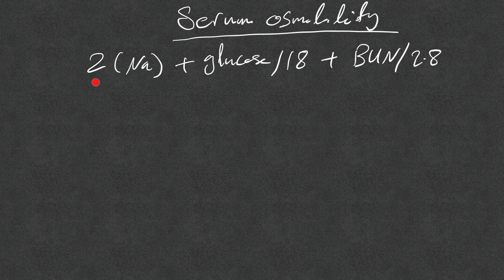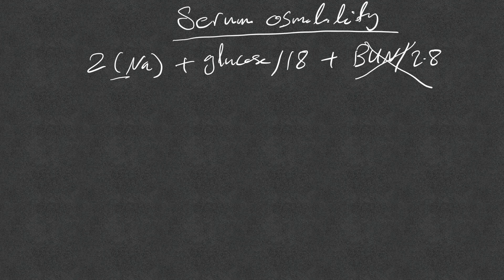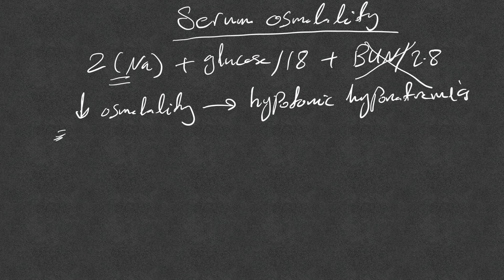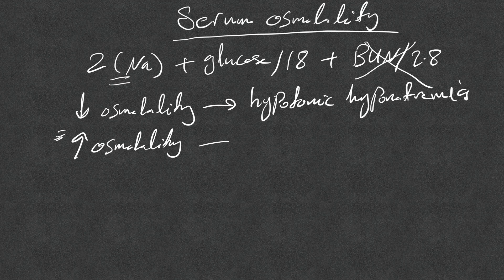Serum osmolality is mainly contributed by sodium, then glucose, then BUN — though BUN moves freely between intracellular and extracellular fluid so it has no real impact on osmolality. In all cases of hyponatremia, because of low sodium concentration, we generally expect decreased osmolality — what we call hypotonic hyponatremia. The exception is hyponatremia from osmotic water shift, like in critical hyperglycemia or mannitol, where osmolality is actually increased — hypertonic hyponatremia.